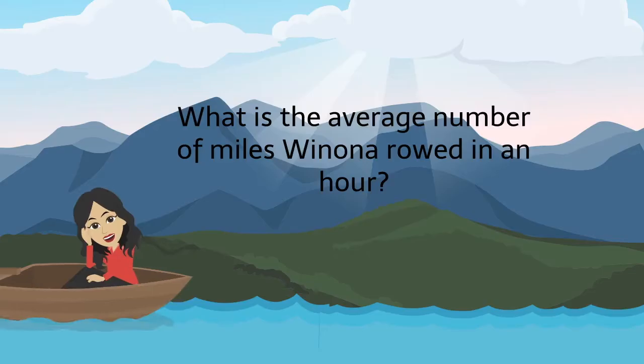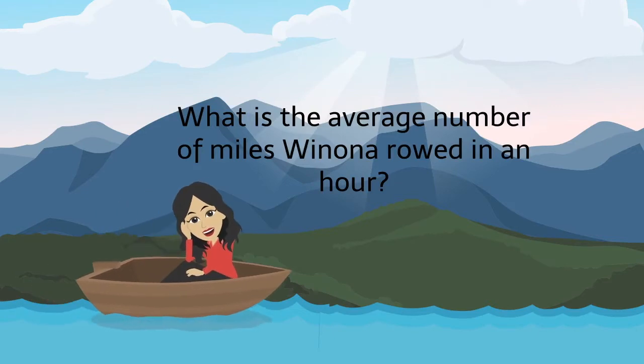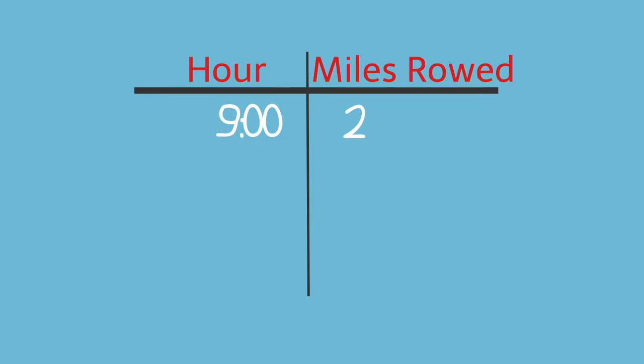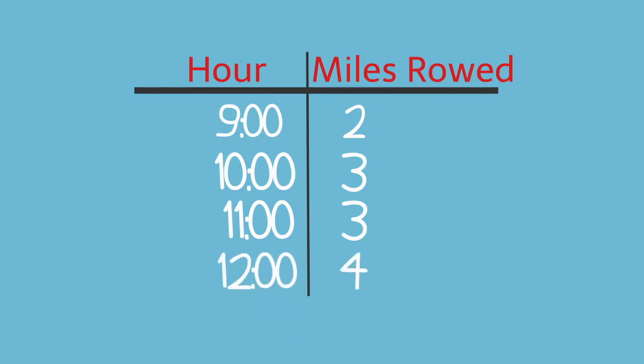For example, what is the average number of miles Winona rowed in an hour? At 9 o'clock she rowed 2 miles. 10 o'clock she rowed 3 miles. At 11 o'clock she rowed another 3 miles. And at 12 o'clock she rowed 4 miles.